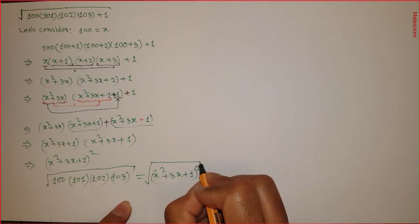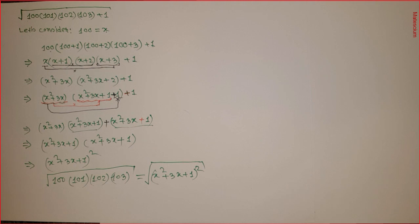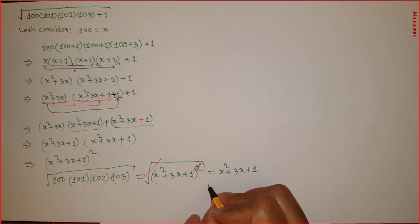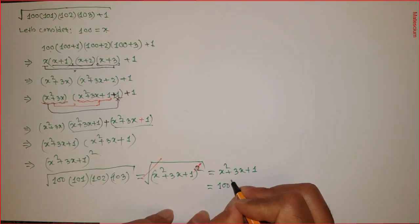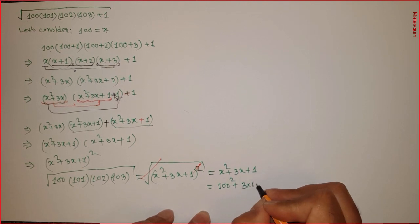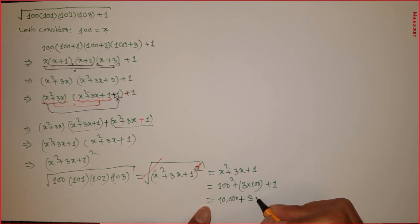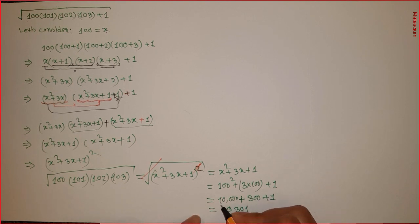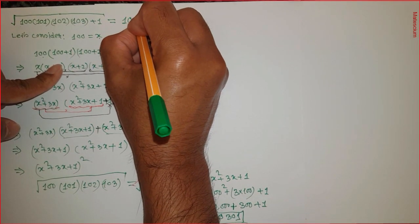Taking the square root of a perfect square means the square root and the square cancel each other, leaving x squared plus 3x plus 1. Substituting x equals 100, the result becomes 100 squared plus 3 times 100 plus 1, which is 10,000 plus 300 plus 1. That equals 10,301. So the answer to this problem is 10,301.